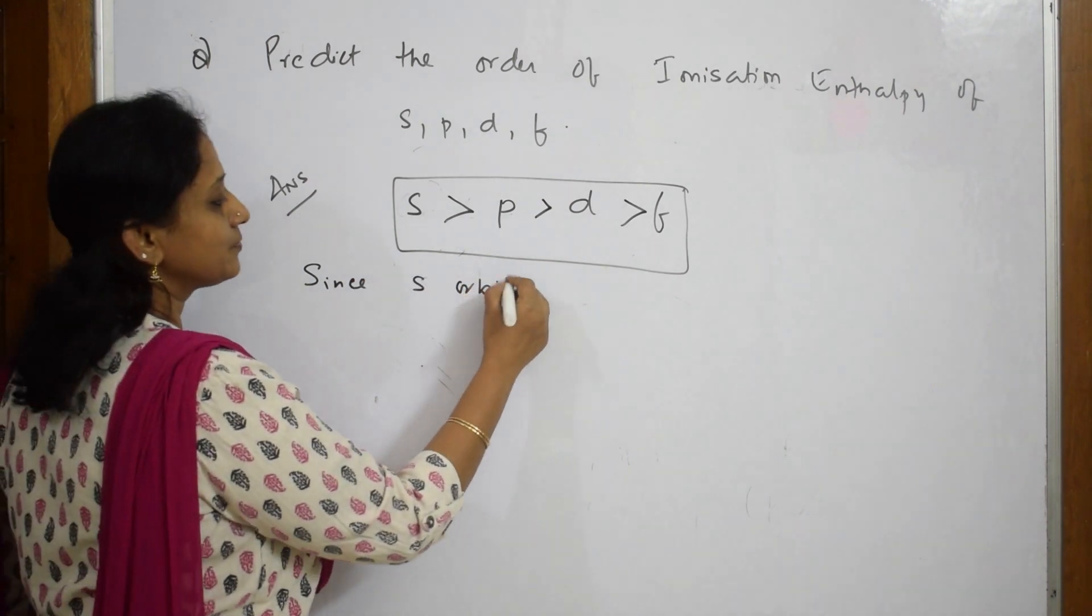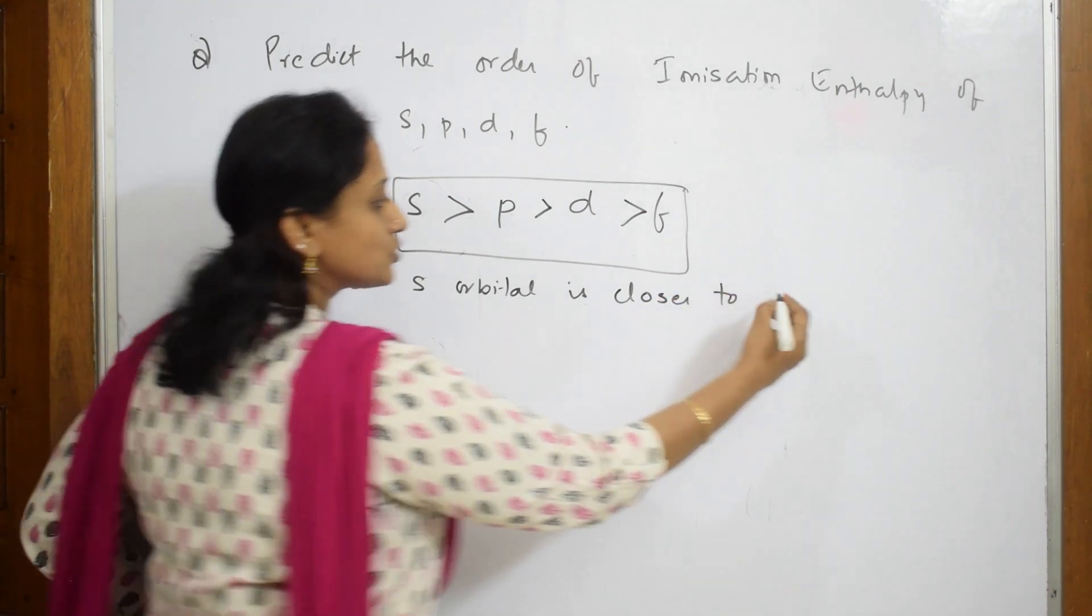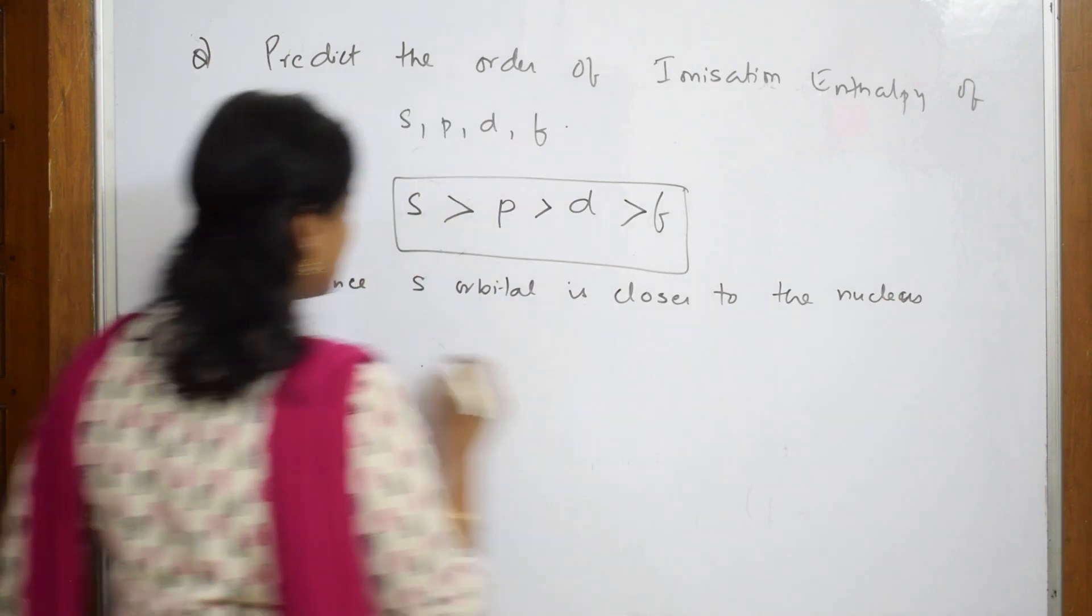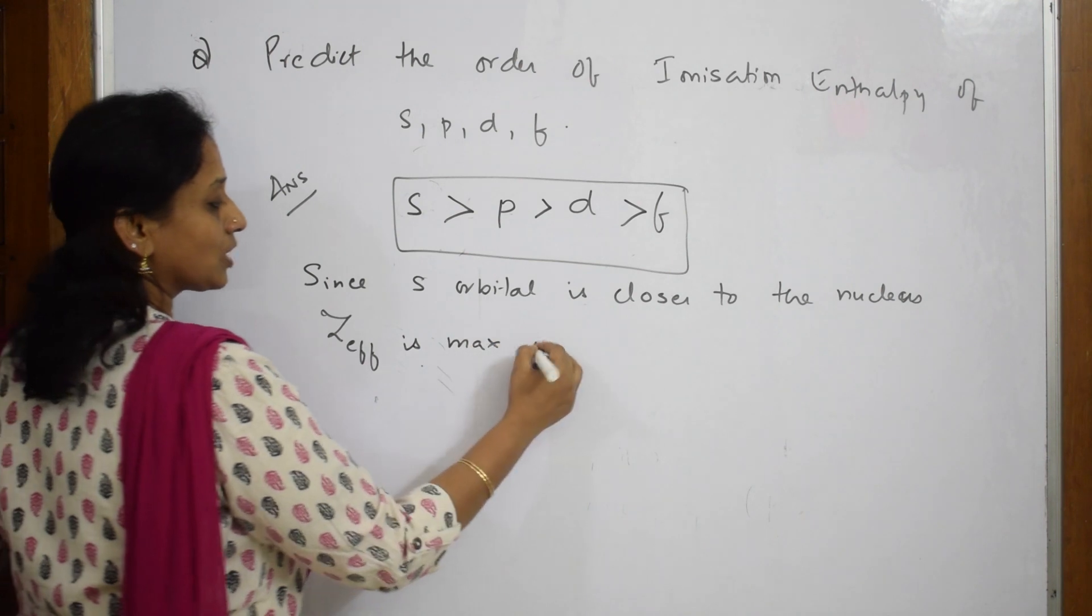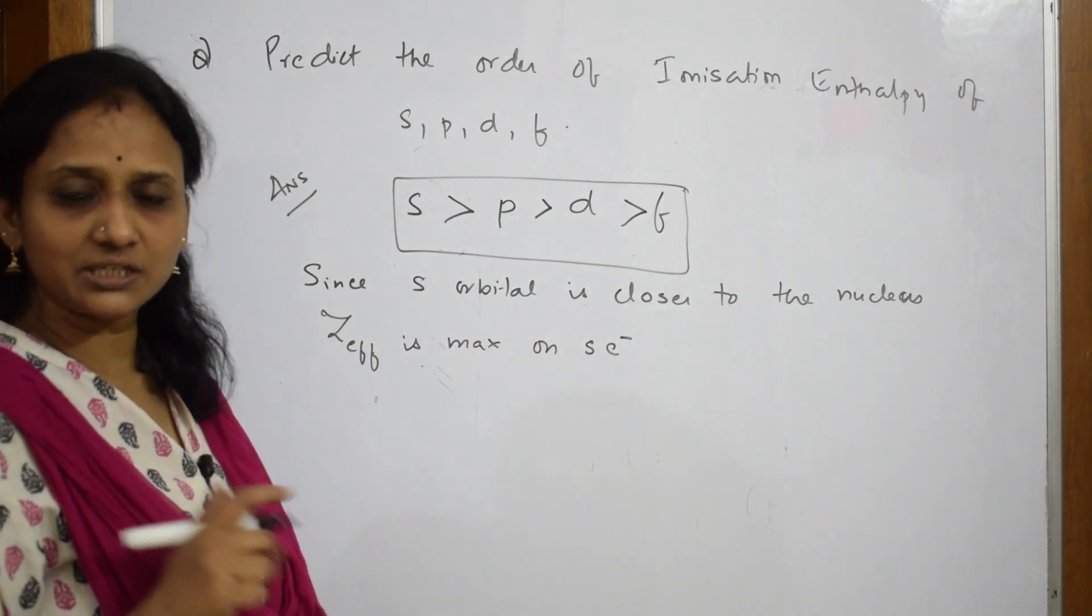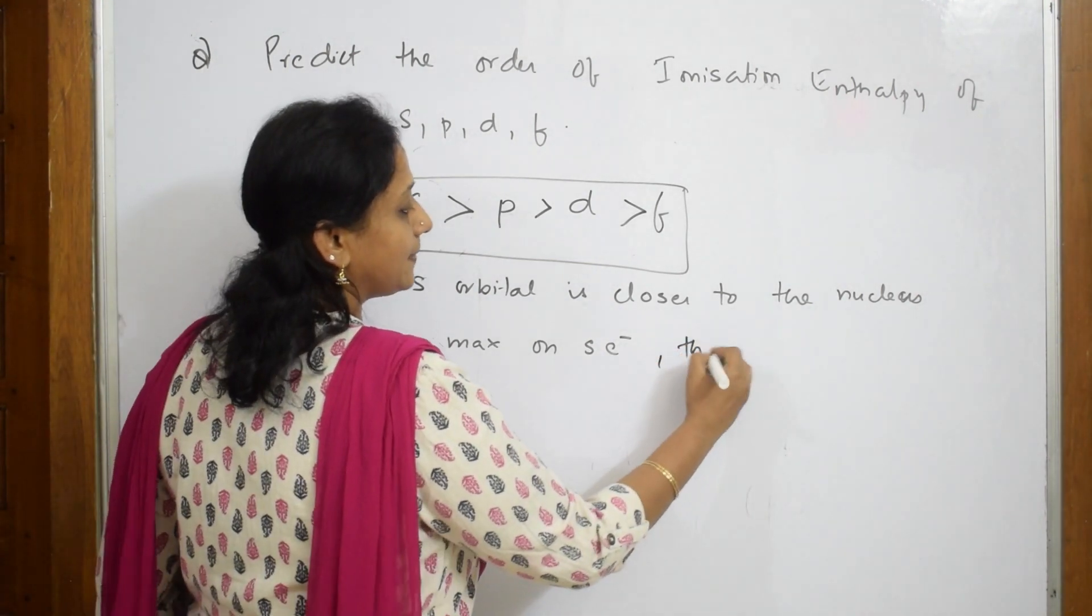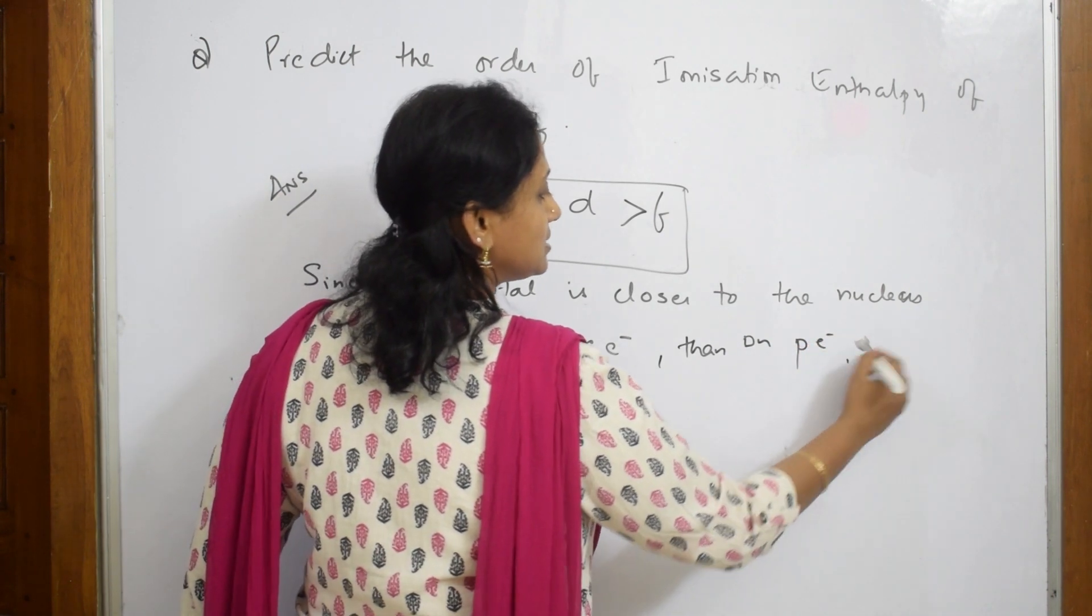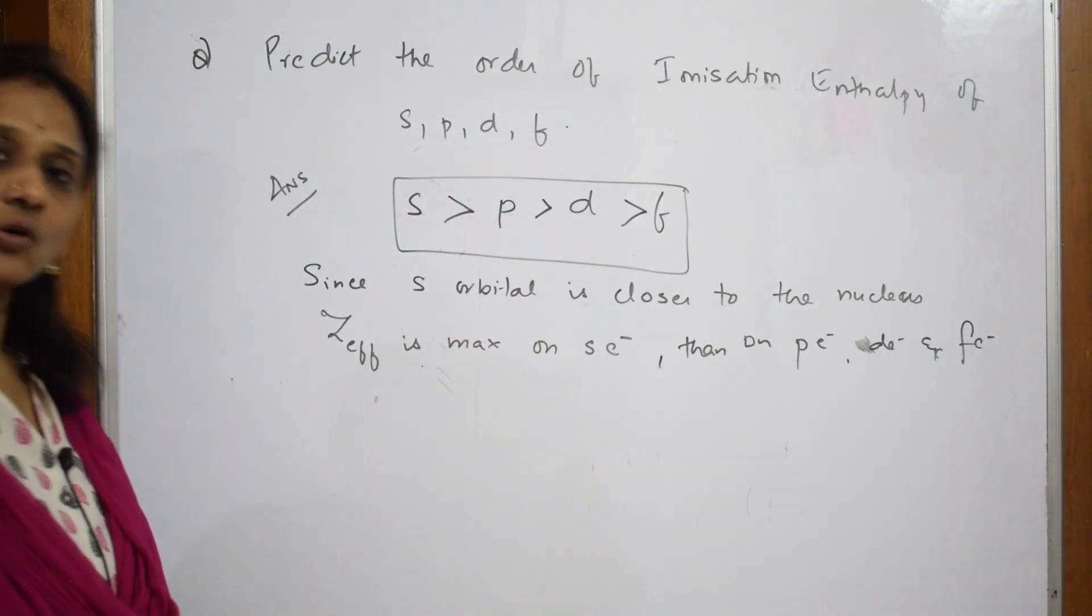S orbital is closer to the nucleus. Z effective is maximum on s electrons. That is, the nuclear pull, effective nuclear charge, is more on s electrons, then p electrons, then d electrons, and then finally f electrons. Hence, this is the order.